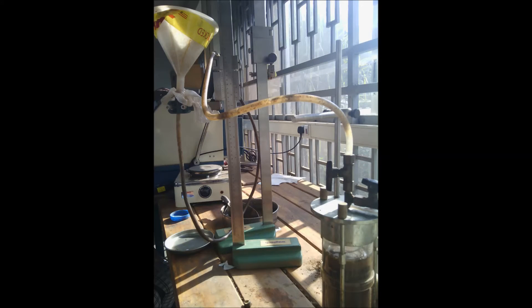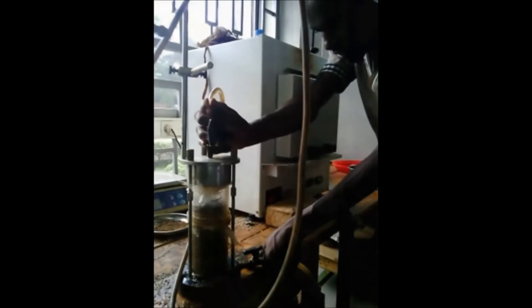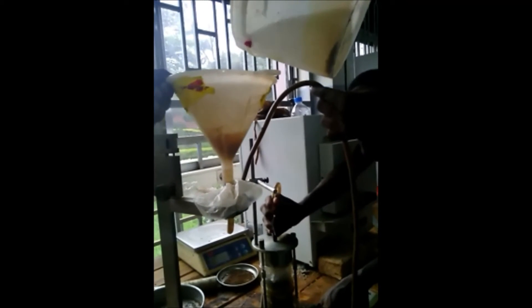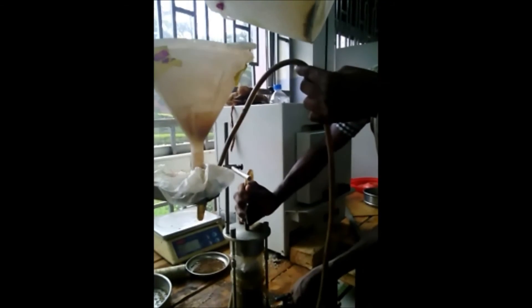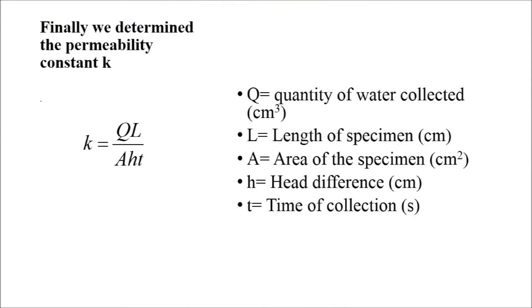Finally, we used all those data such as Q, and L which is the height at which the specimen sits in the permeameter, and the time recorded using a stopwatch. Then we find out the constant K. We compare it with its specific gravity and the void ratio to find out how water passes through our soil sample — whether it passes quickly, easily, or slowly — so that we understand how water really moves through our sample.